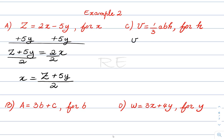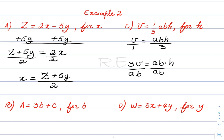To solve for h, we write it as v equals abh over 3. Cross multiplying gives 3v equals abh. Since h is multiplied by ab, we divide both sides by ab to isolate h. Finally, h is equal to 3v over ab.